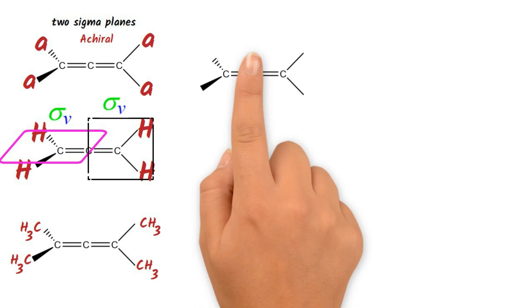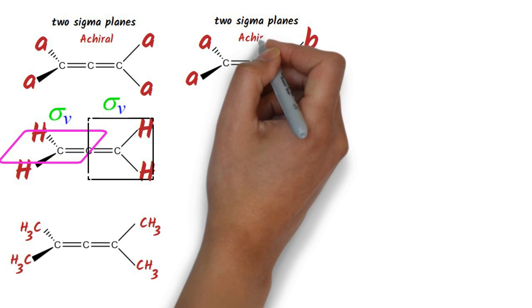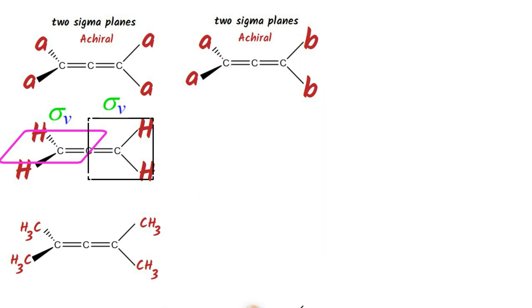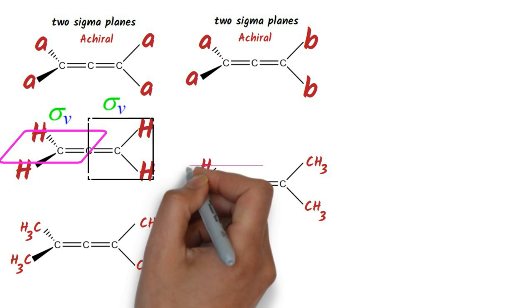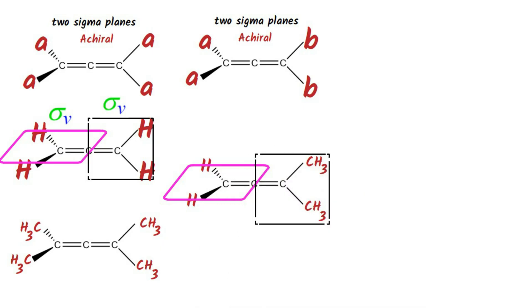Take this second type of allene where the end carbons have similar substituents but the two substituents are different from each other. This will also have two sigma planes, and hence the molecule will be achiral. As an example, consider an allene with only hydrogens at the left end carbon and methyl on the right end carbon. Here also, the horizontal plane will be sigma for the vertical, and the vertical plane will be sigma for the horizontal. Hence this type of allene will also be achiral.